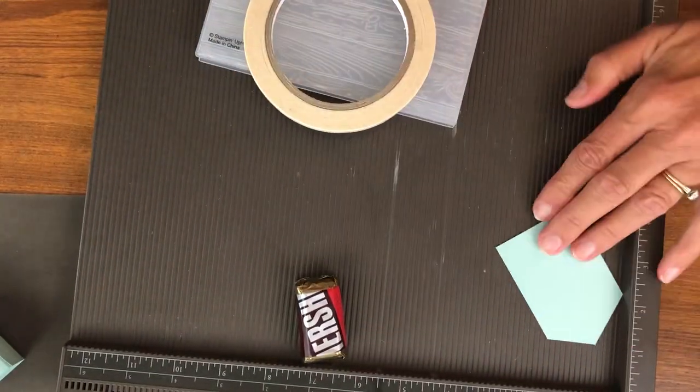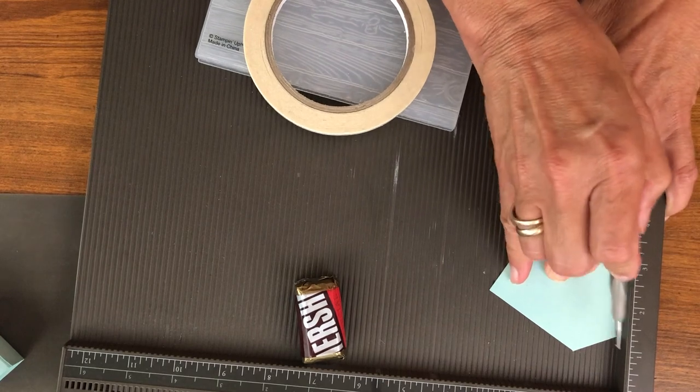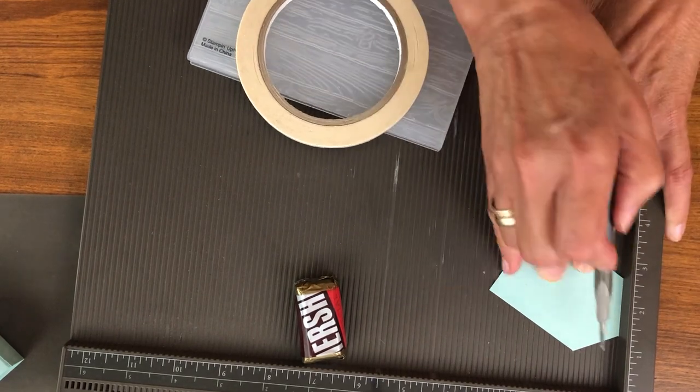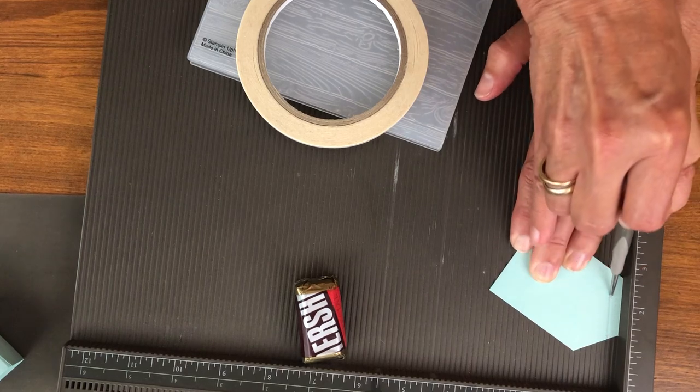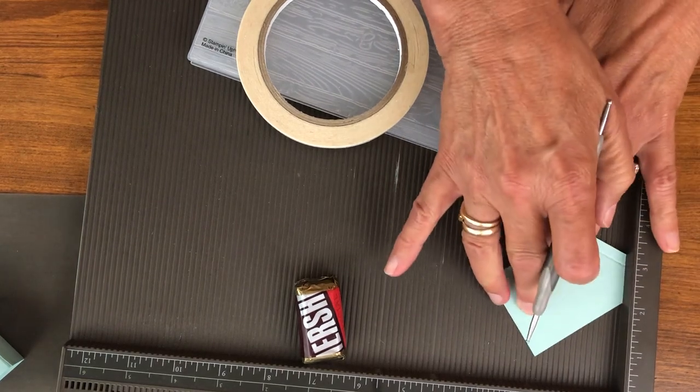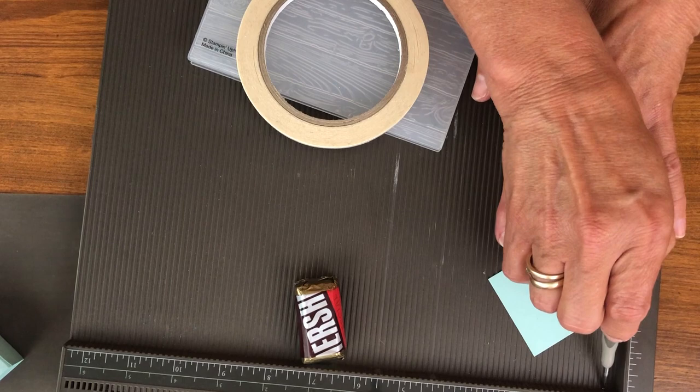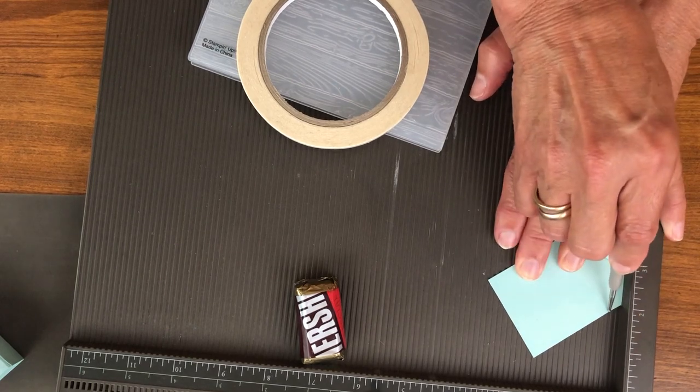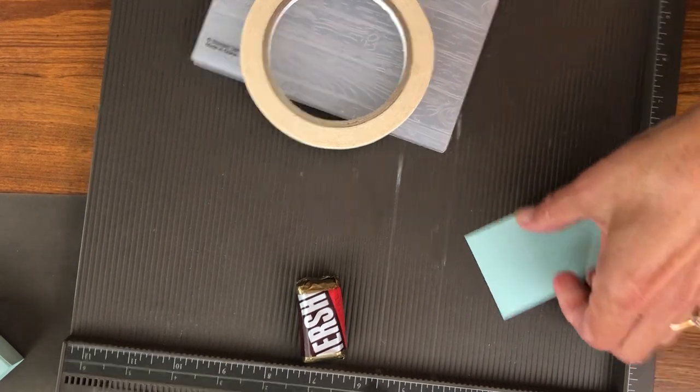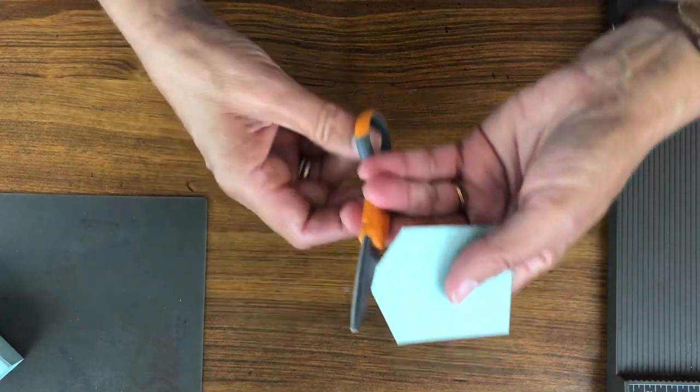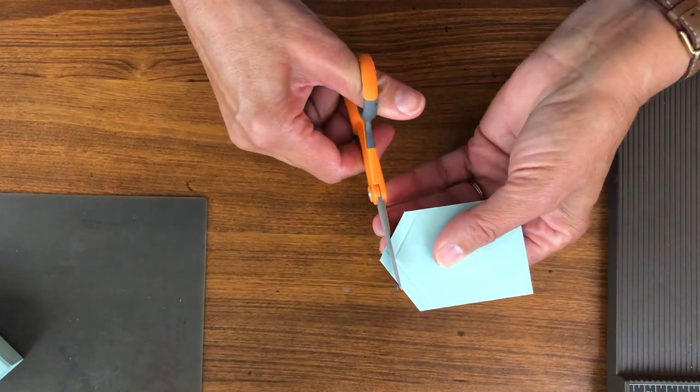This time I'm going to take these two pieces and I put this right along my scoring board and then I am going to score at a quarter inch. And then I'm going to turn this one. Quarter inch. I knew that didn't look big enough. So I do this on both and then cut right across the top.